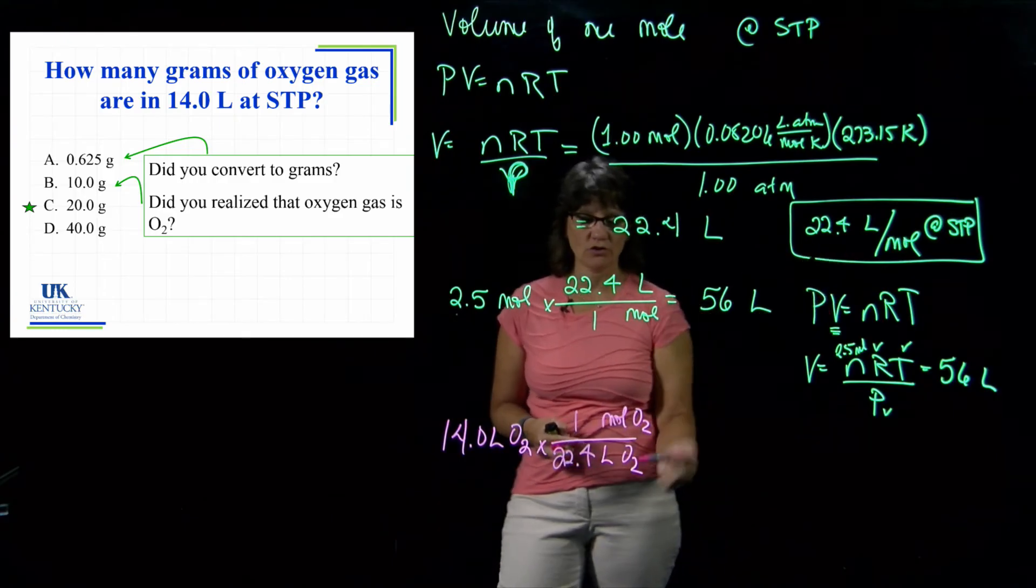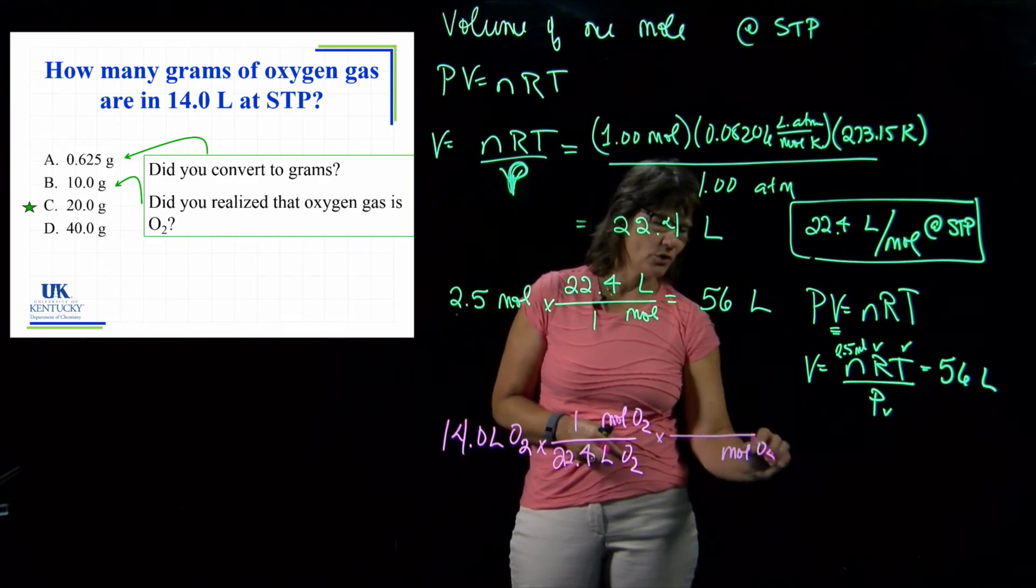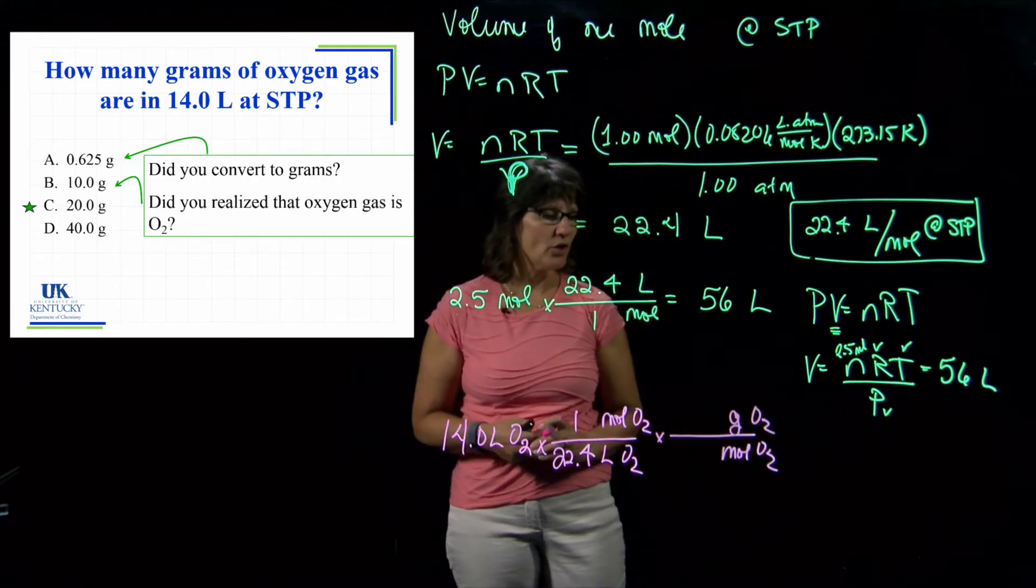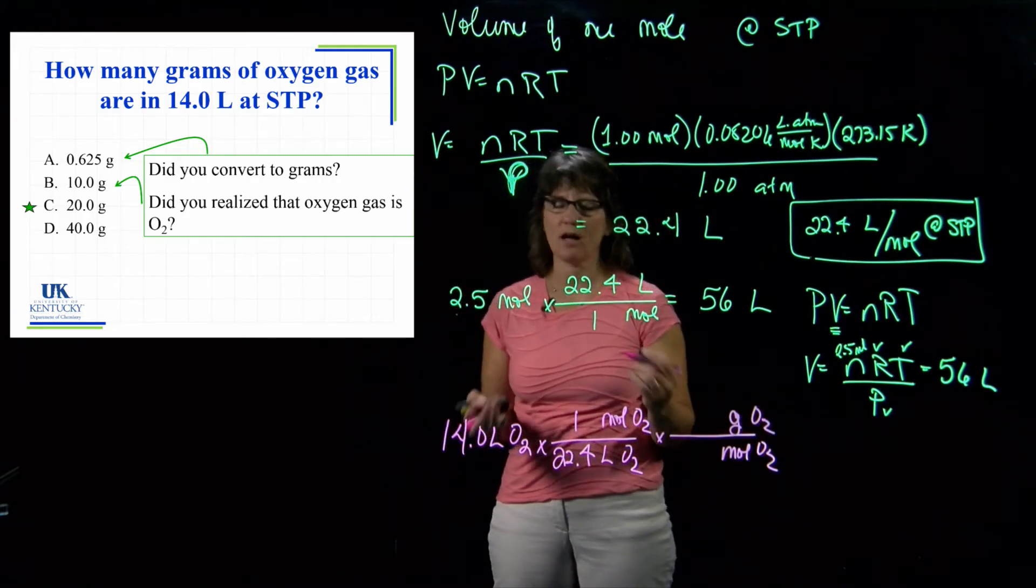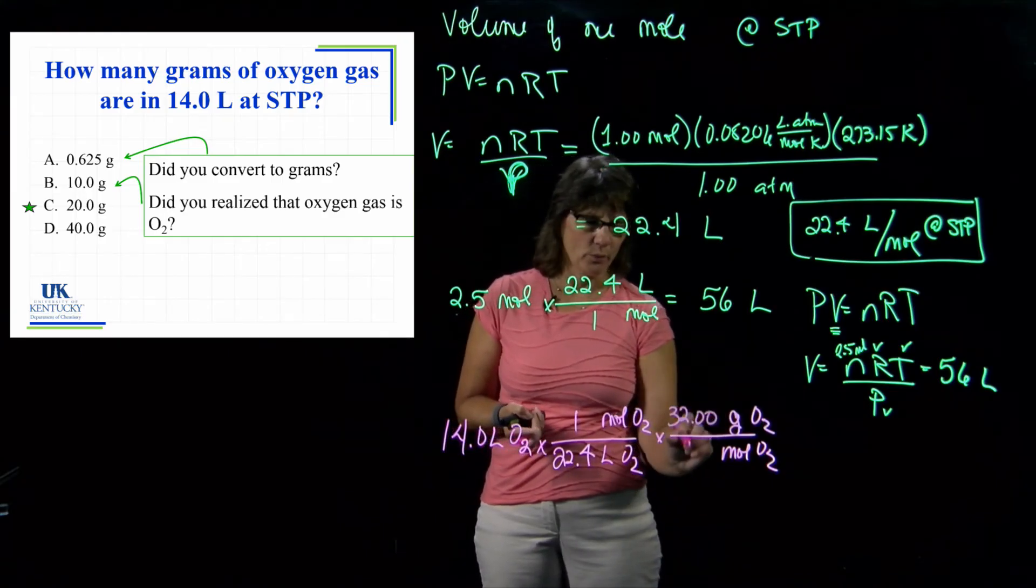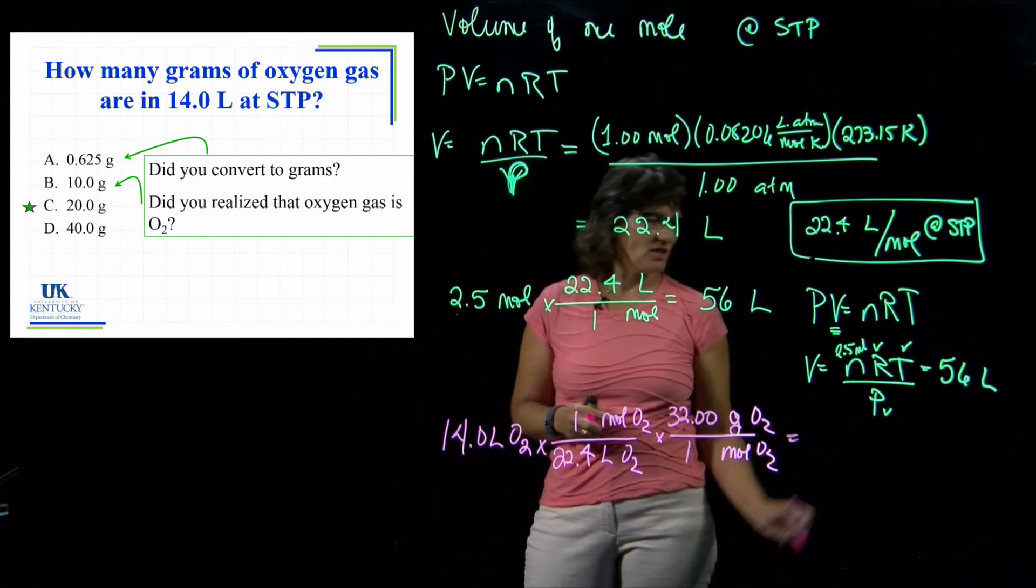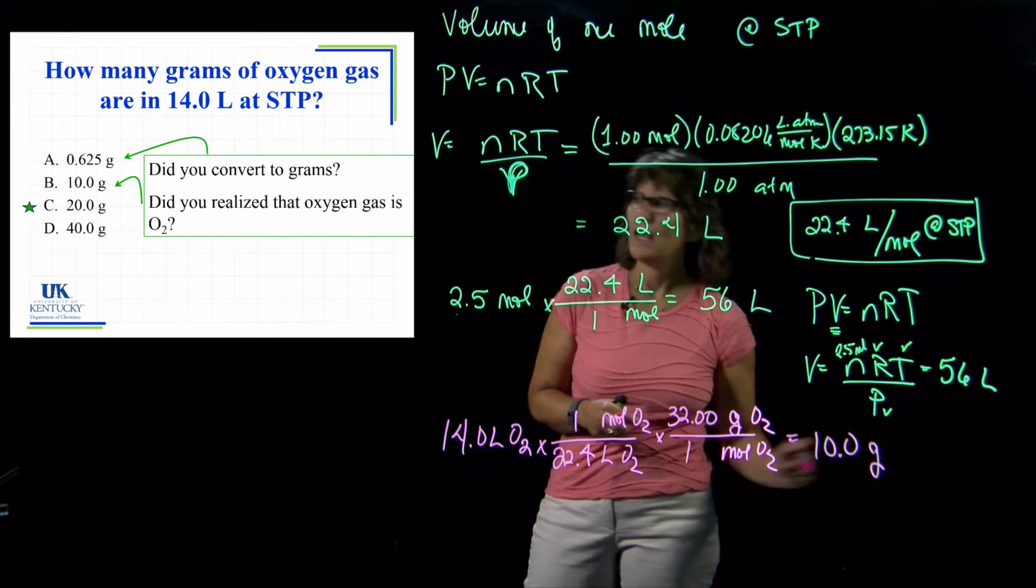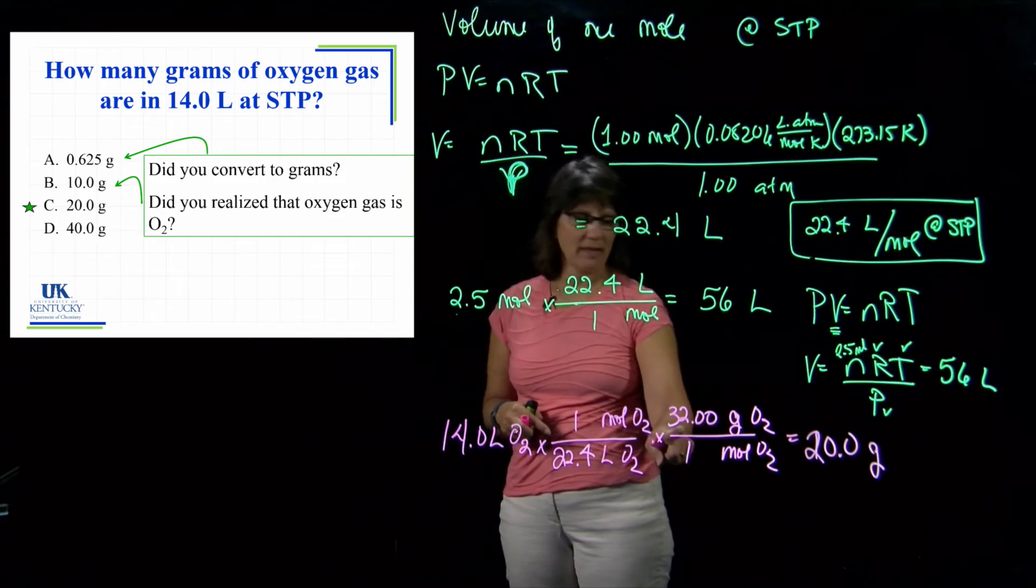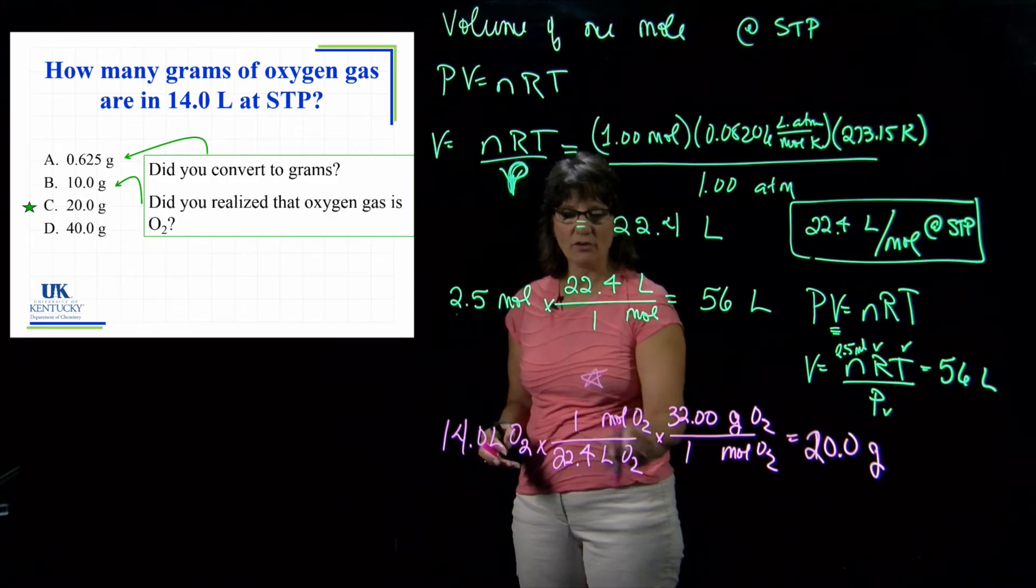Then I could say I don't want moles of O2, I want grams of O2. So then I go to the periodic table and see that oxygen is 16.00, so this is 32.00 grams in a mole. That will give me the grams of oxygen, which is 20. If you used 16 here instead of 32, that's where you'd get the 10.